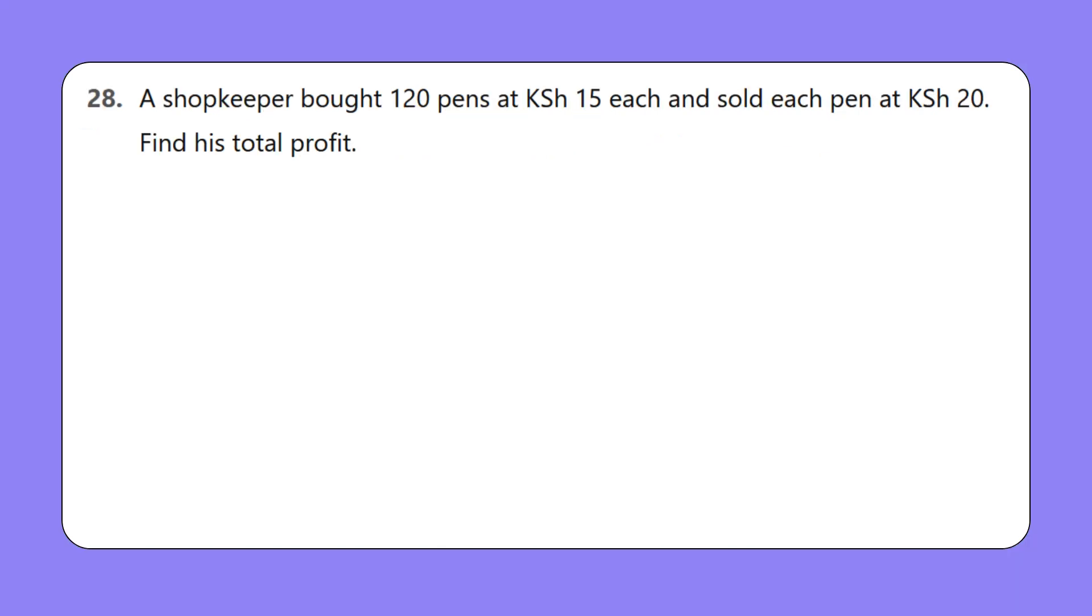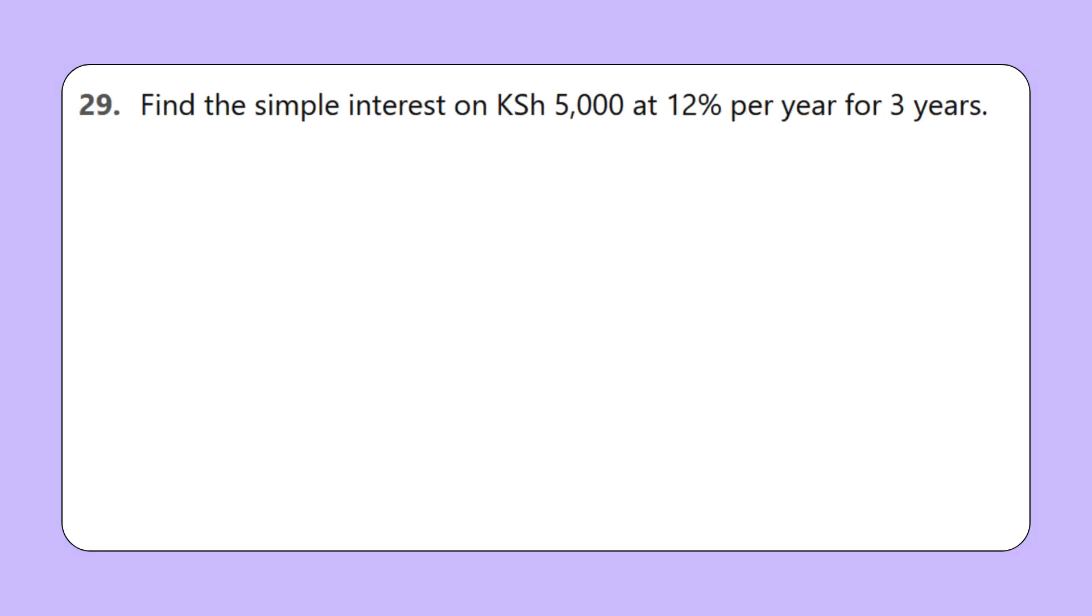28. A shopkeeper bought 120 pens at 15 Kenyan shillings each and sold each pen at 20 Kenyan shillings. Find his total profit. 29. Find the simple interest on 5,000 Kenyan shillings at 12% per year for 3 years.